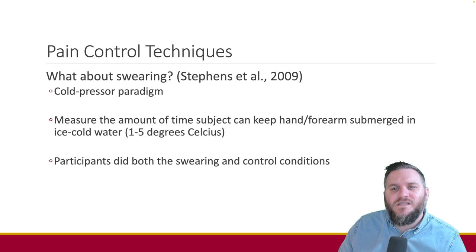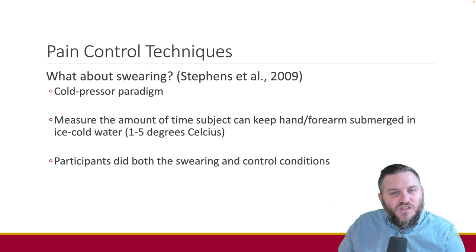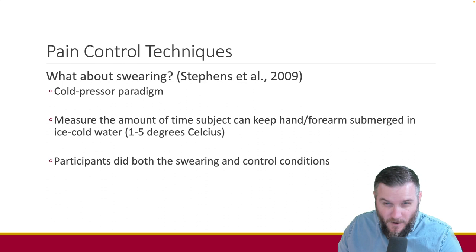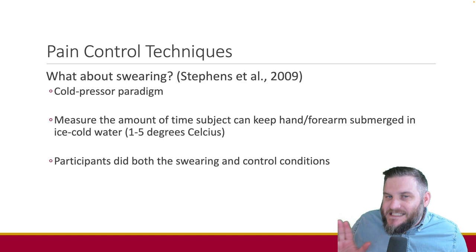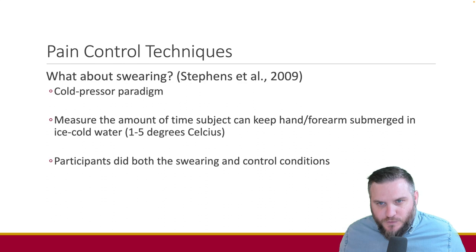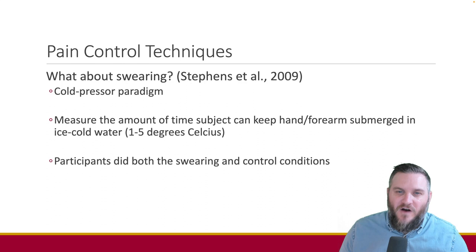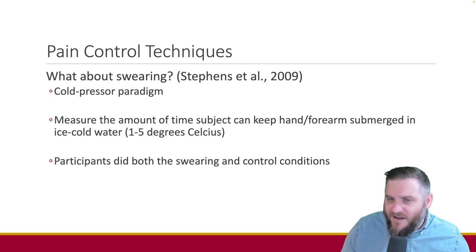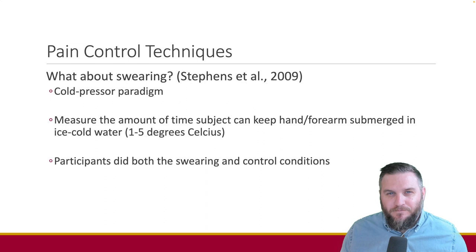They were also asked for five words to describe a table, using the word corresponding to the position of the swear word as the control. They then used a cold pressor paradigm — nobody actually slammed their thumb with a hammer. Participants submerged one hand and a little of their forearm into ice-cold water, down to about five degrees Celsius (around 40 degrees Fahrenheit), until discomfort compelled them to remove it. The time it took to remove their hand served as an index of pain tolerance.